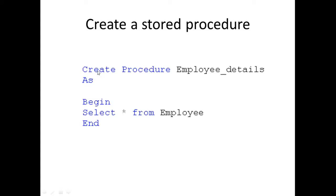The first thing we have to do is go into whatever relational database management system we're using and type this in: CREATE, then PROCEDURE, then the actual name of the procedure. Then AS is the keyword we add, meaning we're beginning our implementation. Then we want a BEGIN and an END, and in between the BEGIN and END we simply add the implementation we want for this particular procedure, so that whenever it's called it executes that piece of functionality.